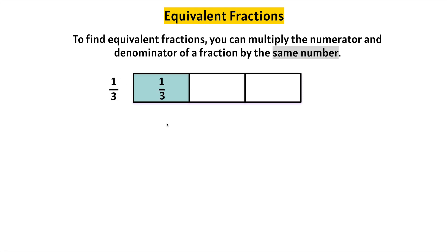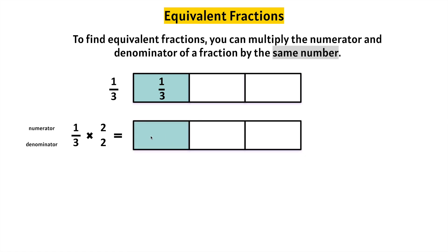One-third. Let's find equivalent fractions for one-third by multiplying the numerator and denominator by two. We have one-third — let's make two times as many. Let's count them all: one, two, three, four, five, six. How many are shaded? Two. So we have two-sixths, which is equivalent to one-third.